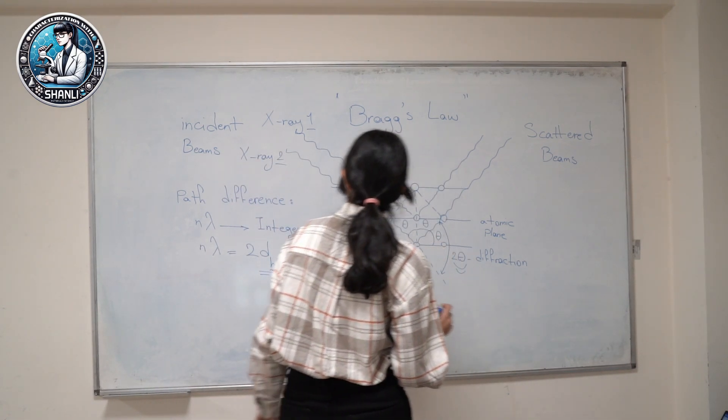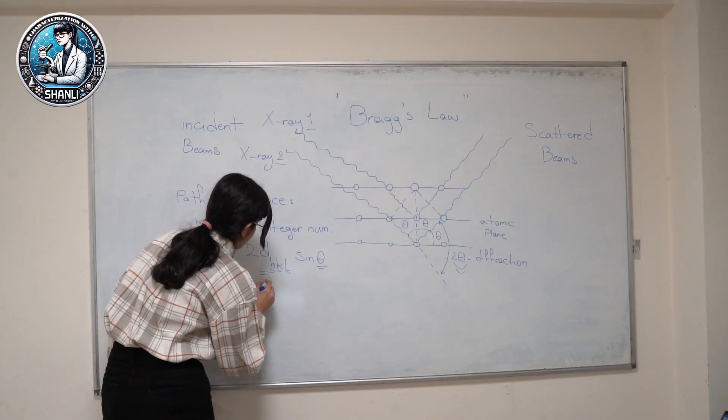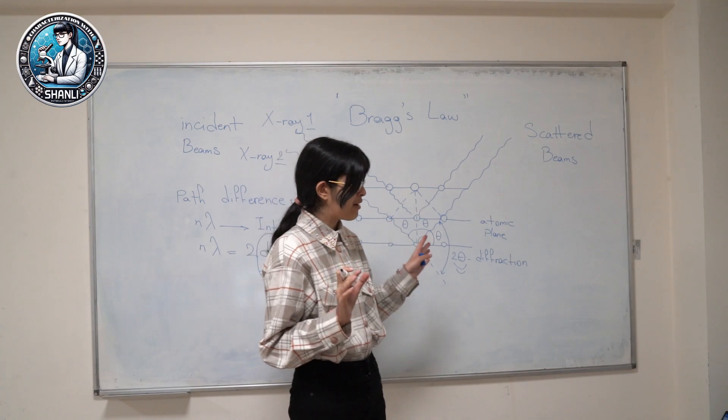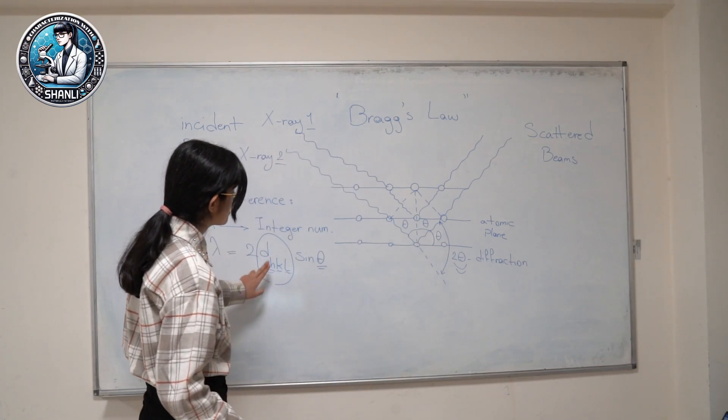Also, in this part, d(h,k,l) accounts for the higher orders of diffraction, which is always n more than 1.